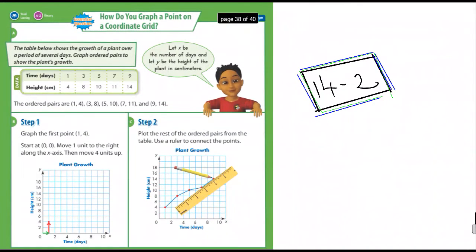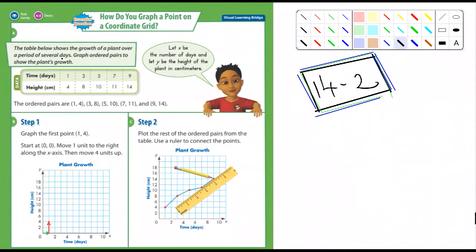This first example is a good example. It says the table below shows the growth of a plant over a period of several days. And it says graph the ordered pairs to show the plant's growth.